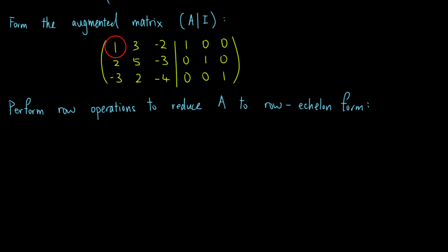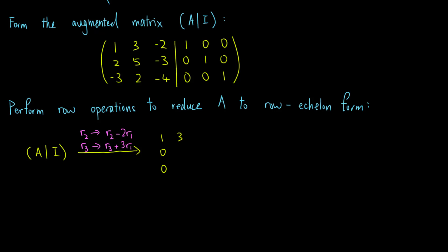Observe that the top left entry of A is already 1, so we proceed to make the entries below the leading one to 0. We replace the second row by the second row minus 2 times the first row, and replace the third row by the third row plus 3 times the first row. We obtain the following augmented matrix — notice that the entries of the identity matrix are also changed.